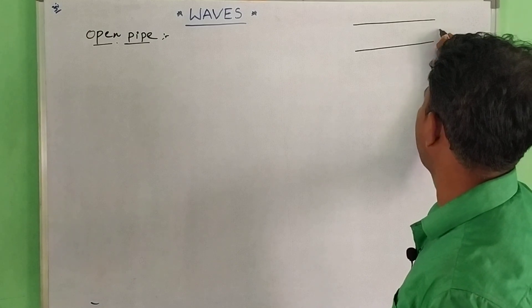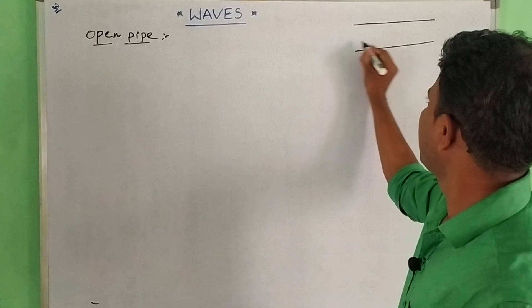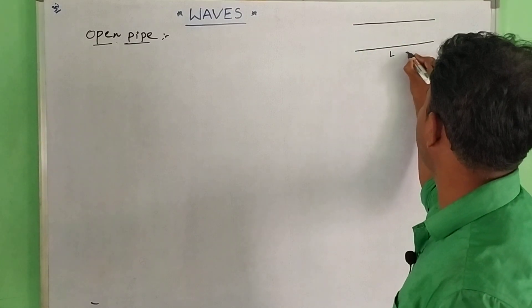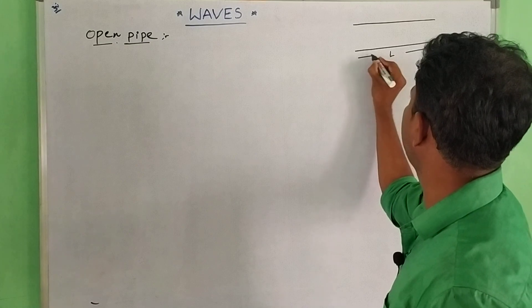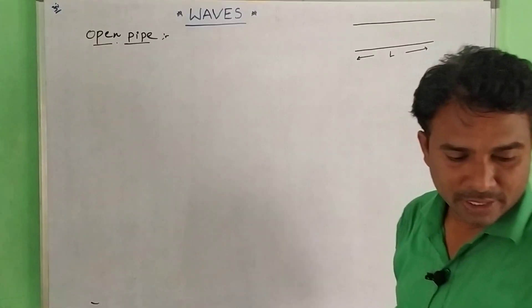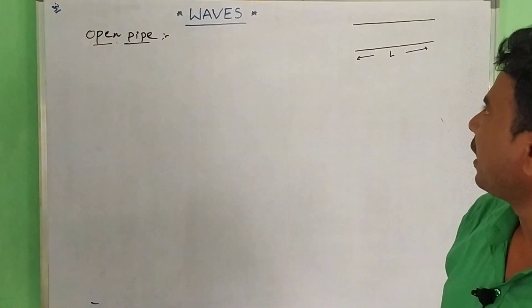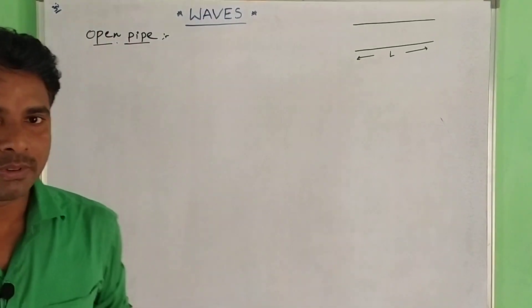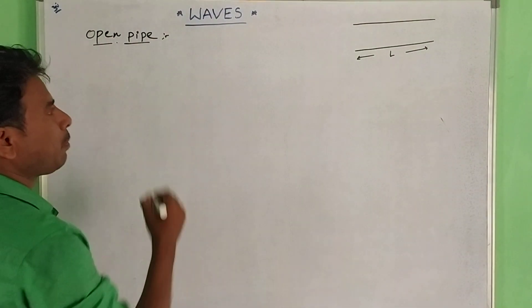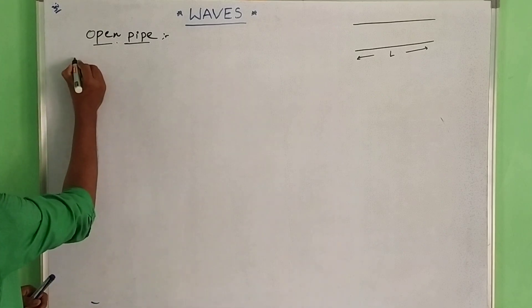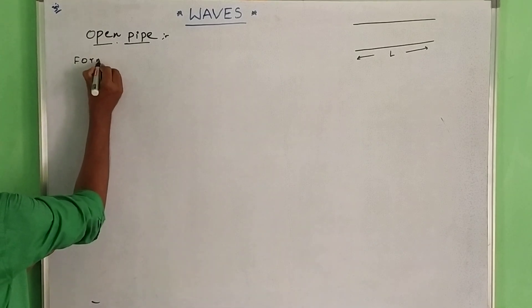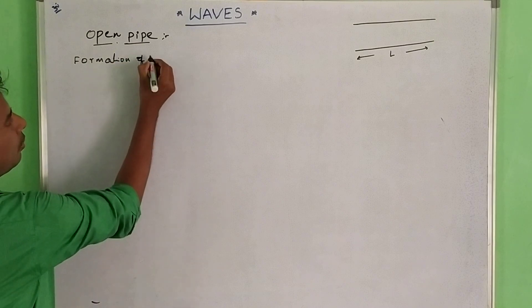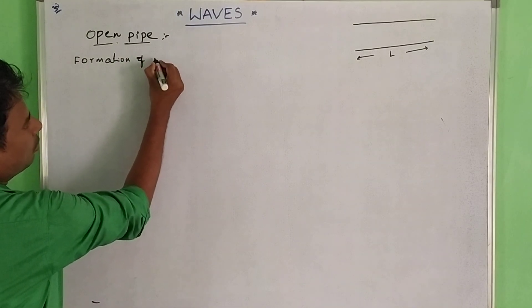One end is open and another end is open — this is called an open pipe. The length of the air column is L. Sound waves travel through this open pipe.